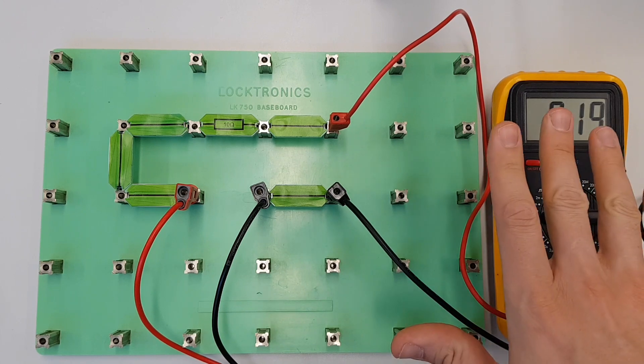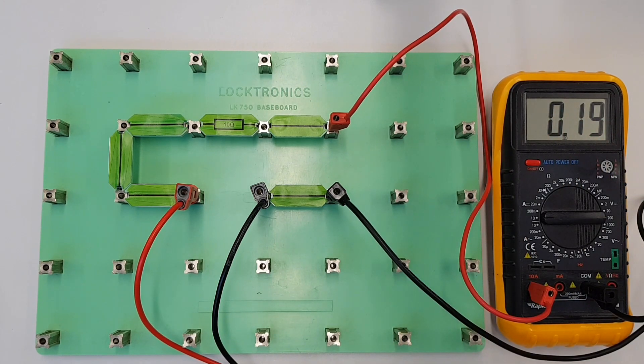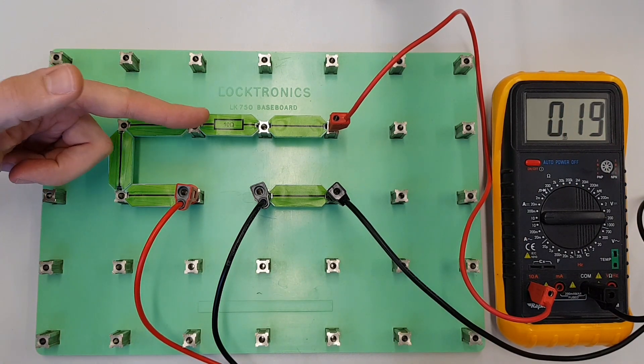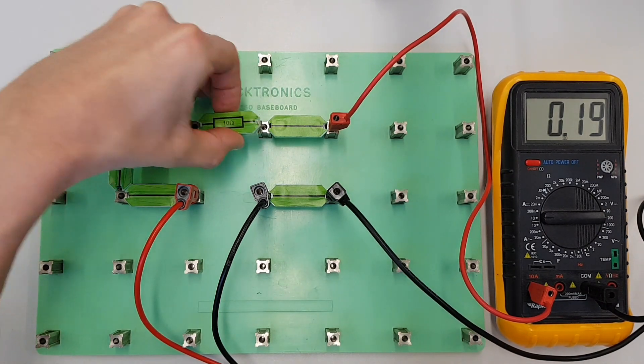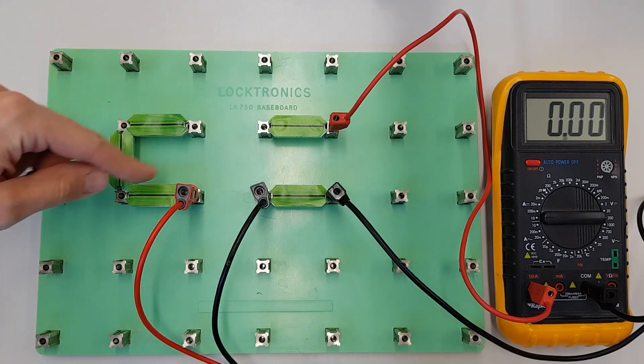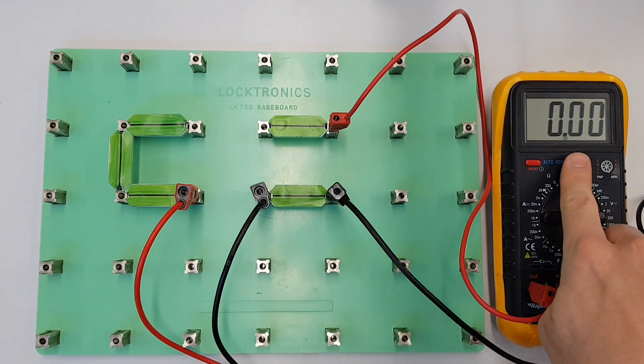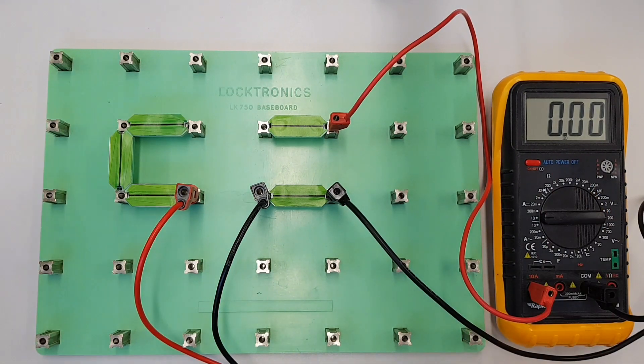So we'll keep this set up as it is and we're just going to tweak one very important thing. So currently we've got 10 ohms connected into the circuit, we're going to remove that 10 ohm resistor.